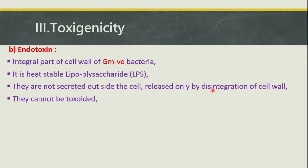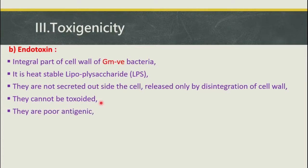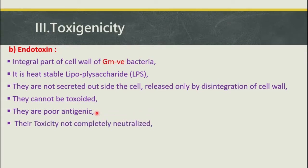Endotoxins cannot be toxoided — that is another property they possess. They are poorly antigenic, meaning they are not as strongly antigenic as exotoxins. Furthermore, their toxicity is not completely neutralized — although antitoxin can generally neutralize toxigenicity, the endotoxin cannot be completely neutralized by antitoxin.